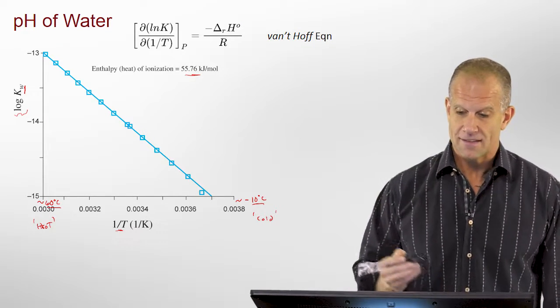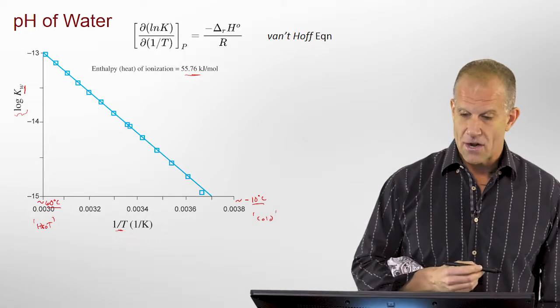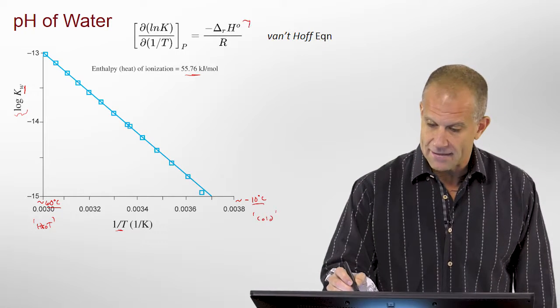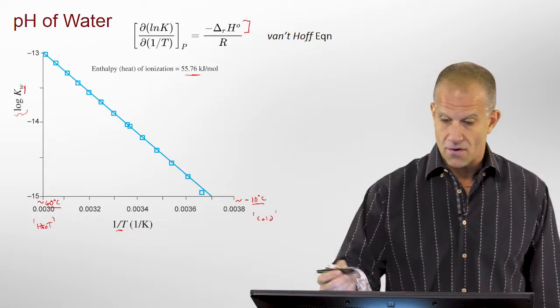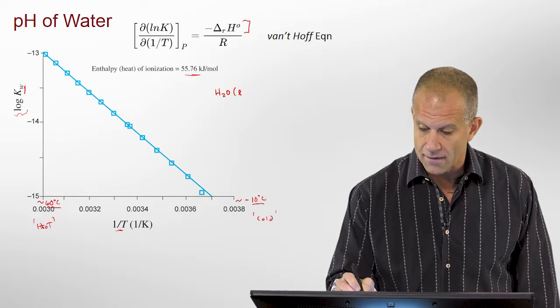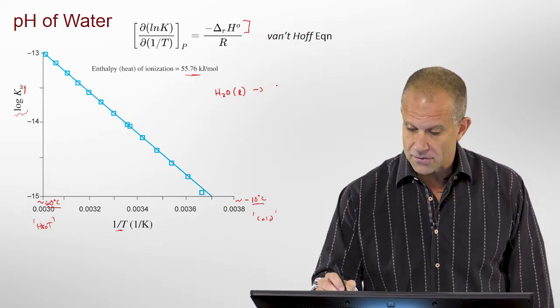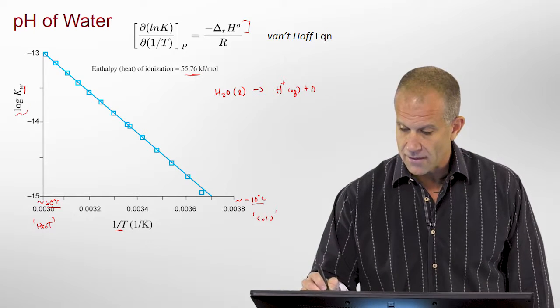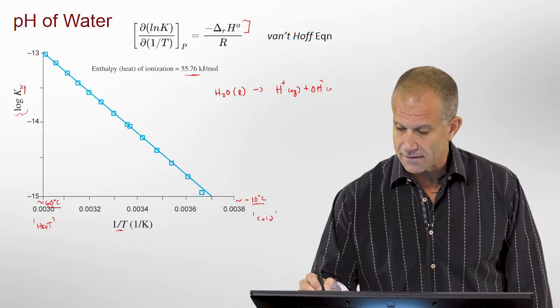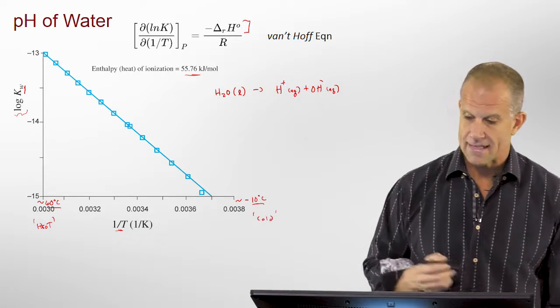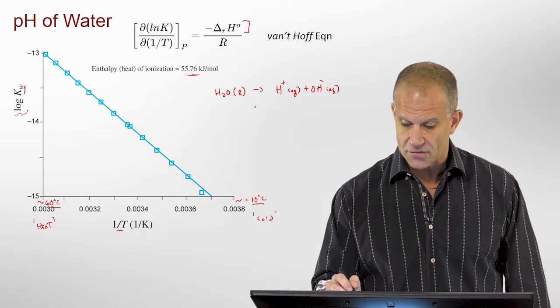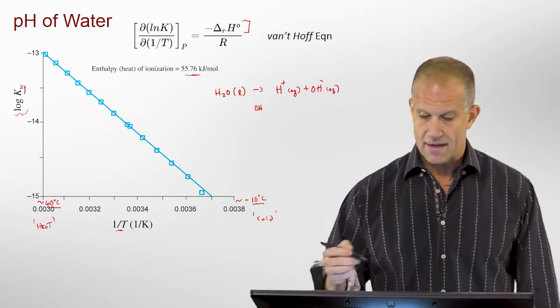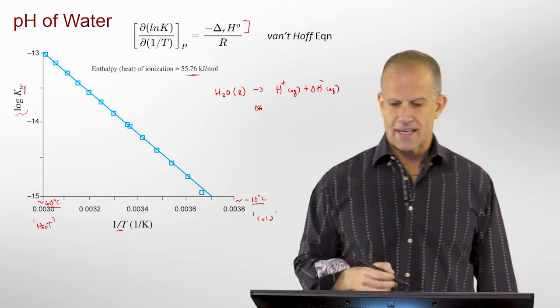And that's what allows us, with the Van't Hoff equation, to get a delta H for this ionization, for the reaction of liquid water going to H-plus in aqueous solution, plus OH-minus in aqueous solution. So, it's telling us that this is endothermic, right?